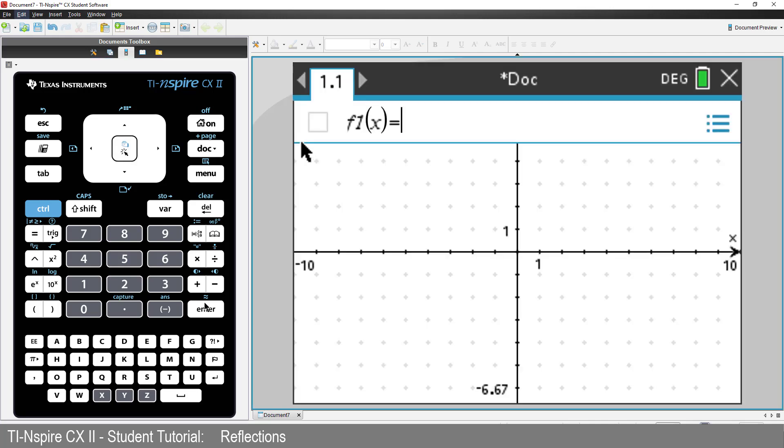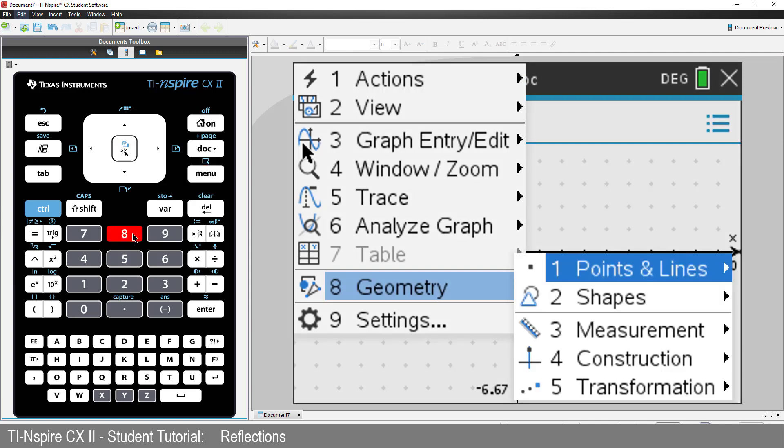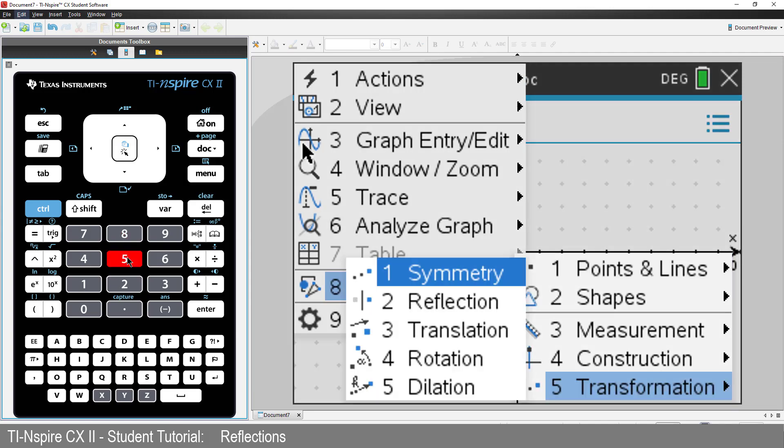I want to use the y-axis as a mirror and reflect points and equations. Press Menu, select Geometry, followed by Transformation and then Reflection.